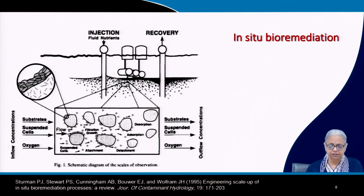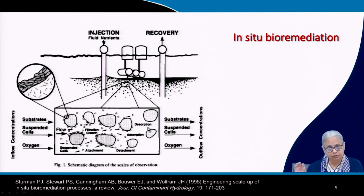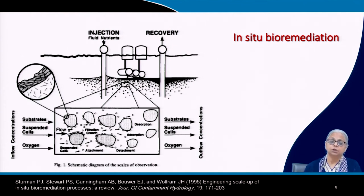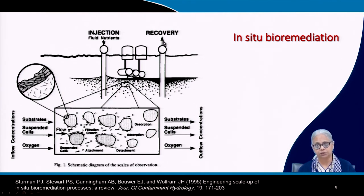For remediating contaminated subsurface environments, what is often required is just nutrients, and in some cases adding acclimated microbial consortia. You can add substrates, suspended cells, oxygen and inorganic nutrients to encourage the native microbial community to grow. If the compounds are resistant or not degradable by the native community, you may need to add acclimated microbial consortia, then recover the contaminated material for further treatment.